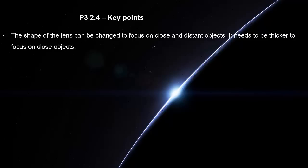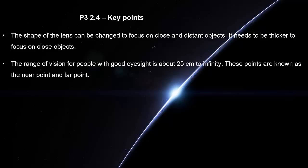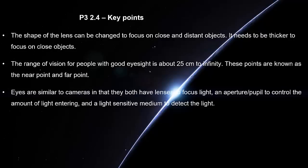It needs to be thicker to focus on close objects. The range of vision for people with good eyesight is about 25 cm to infinity. These points are known as the near point and far point. Eyes are similar to cameras in that they both have lenses to focus light and aperture/pupil to control the amount of light entering and a light sensitive medium to detect the light.